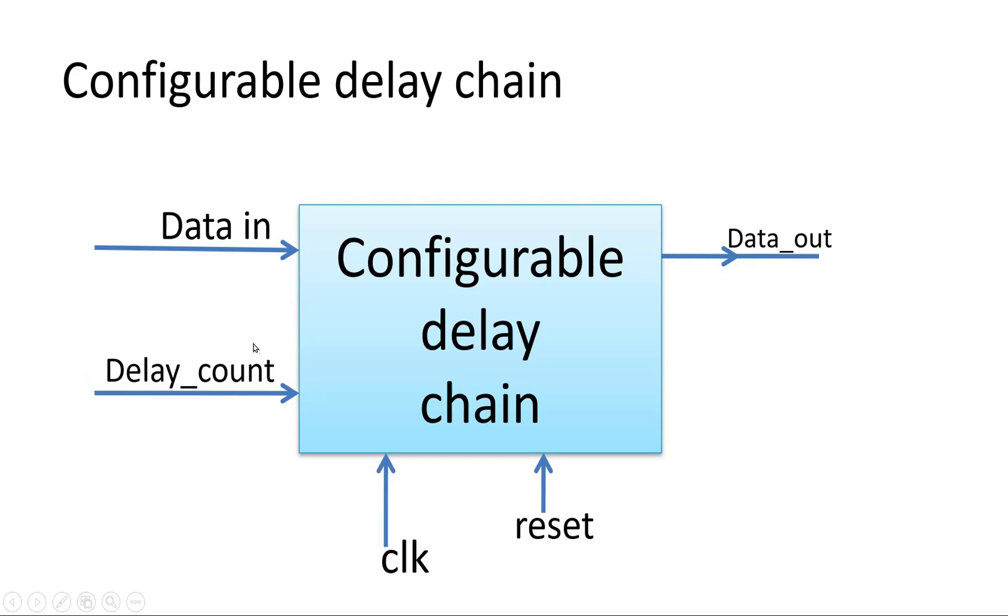So here is an input that is called delay count. So if I give here delay count of 7, then this input should be delayed by 7 clock cycles when it reaches that data output. If I give this delay count as 3, then this data input should be delayed by 3 clock cycles, then it should reach data output. And this can be done on the fly.